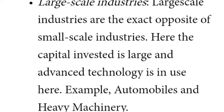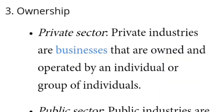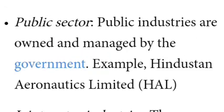Based on ownership, industries are divided into private sector industries, public sector industries, joint sector industries, and cooperative sector industries. Private industries are run by the owner or private individuals. Public sector industries are owned and managed by the government.